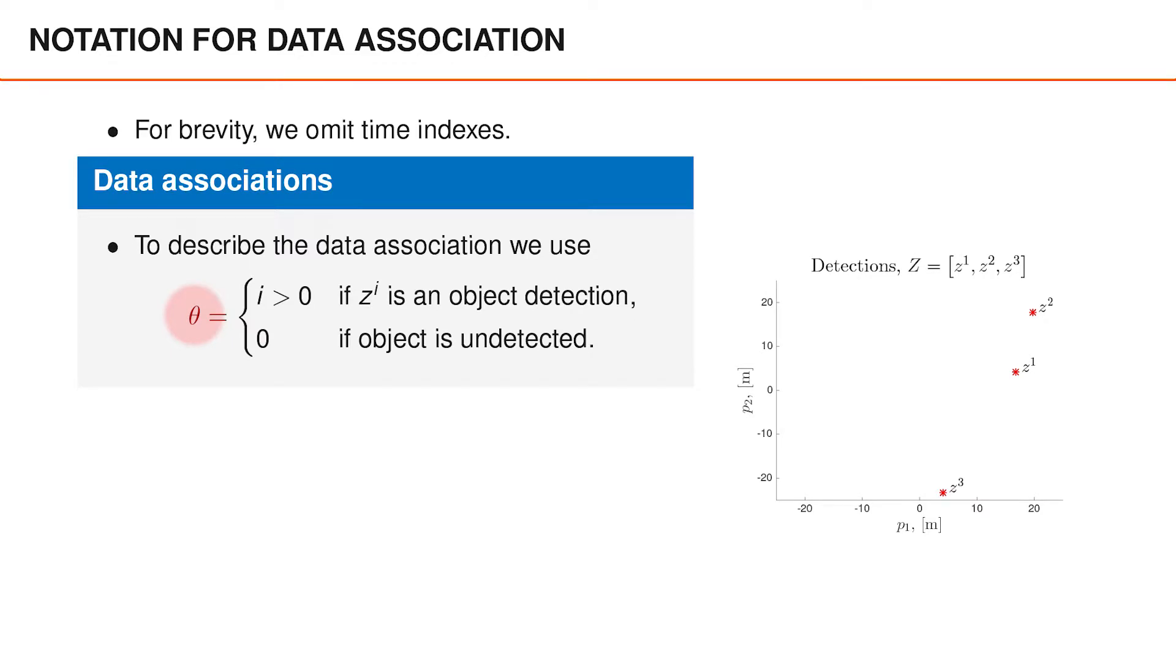We use theta to denote the data association. If theta is equal to zero, then the object is undetected, and all vectors in z are clutter measurements. If theta instead takes a positive value i, then the i-th vector in z is an object measurement.